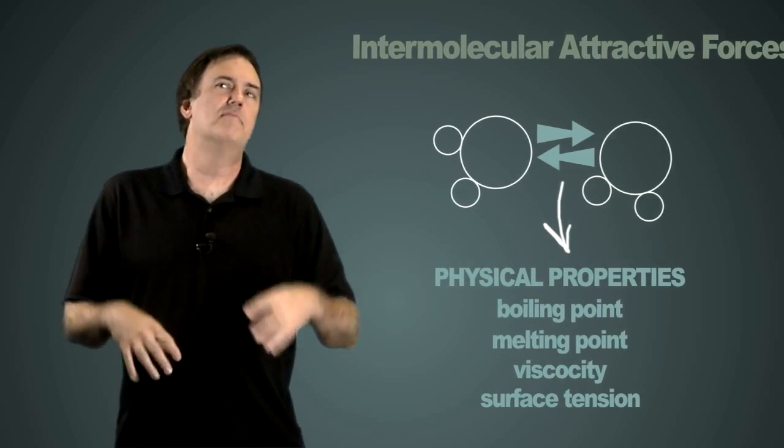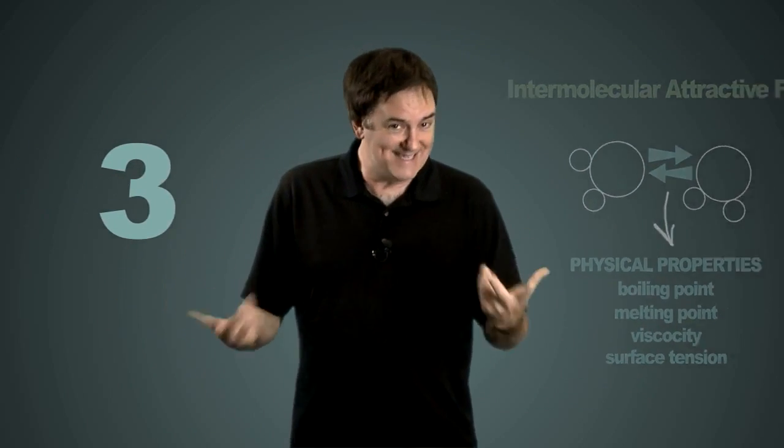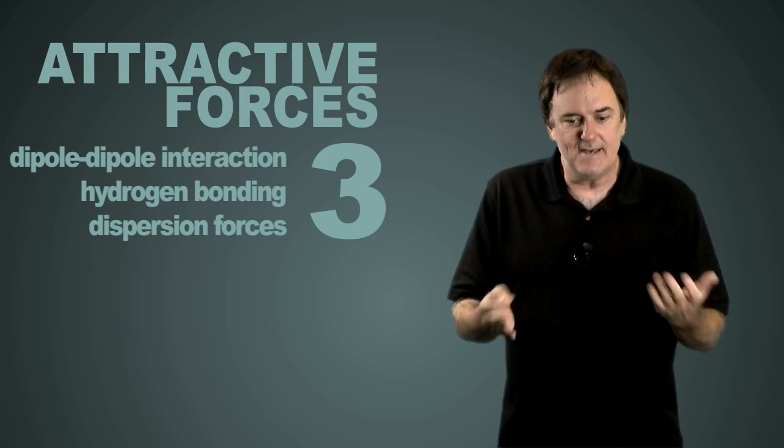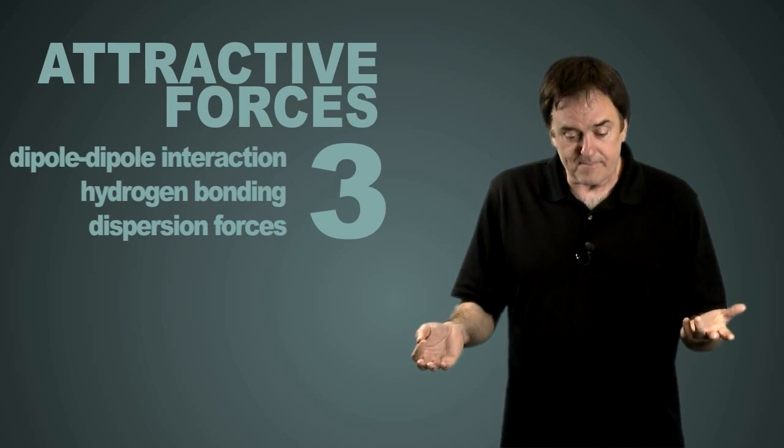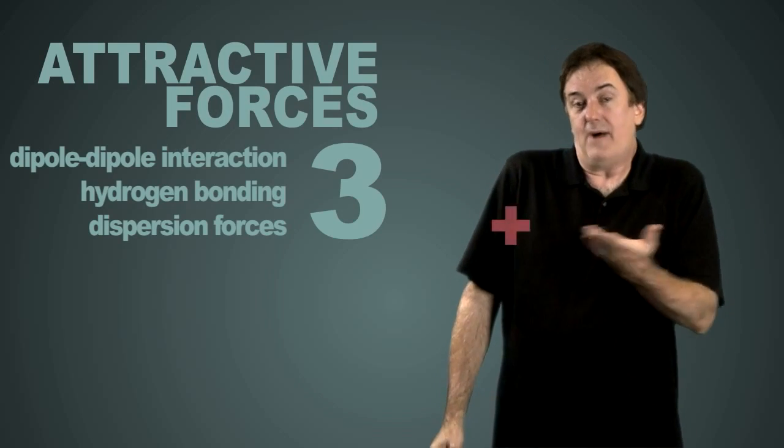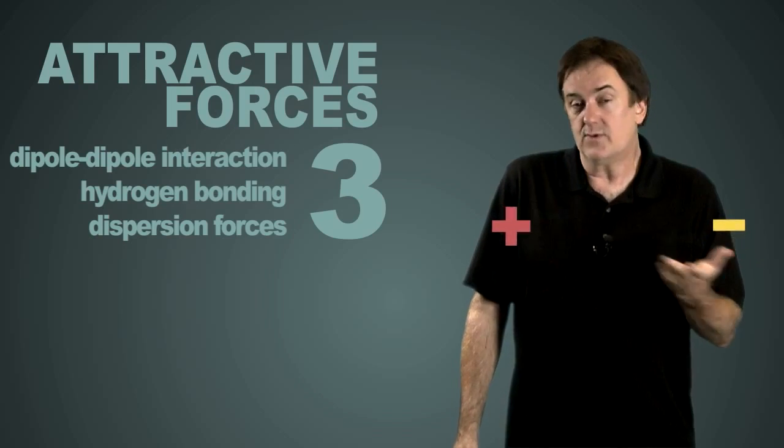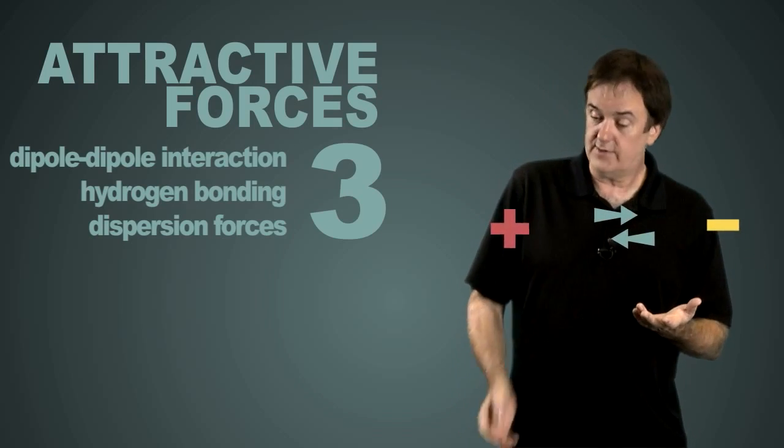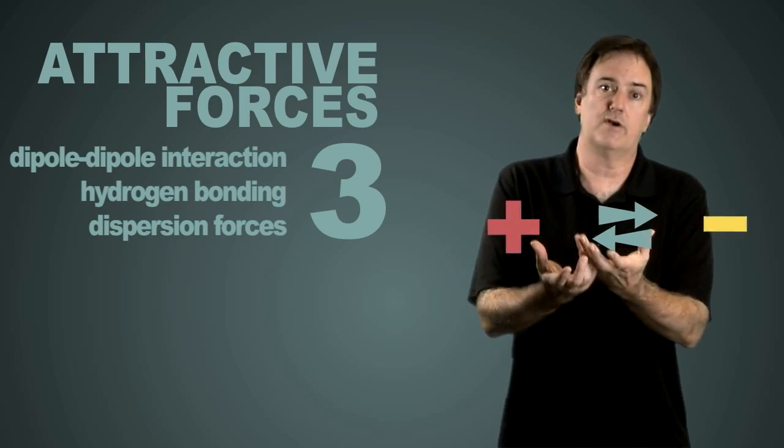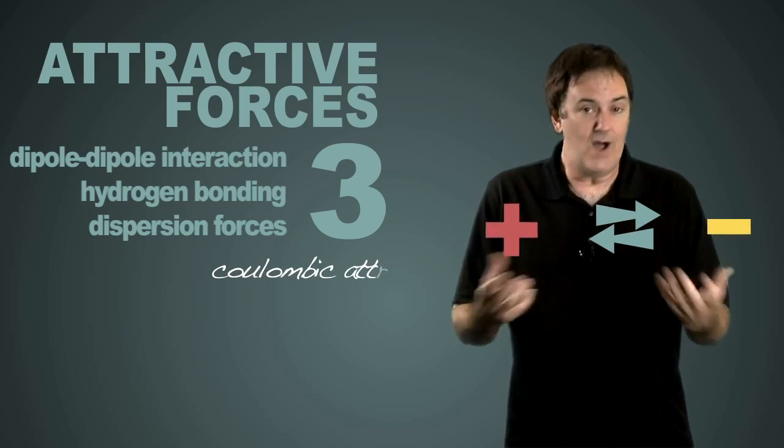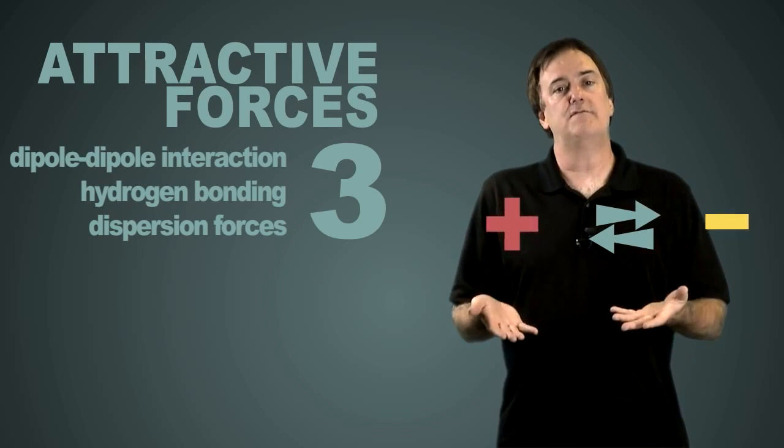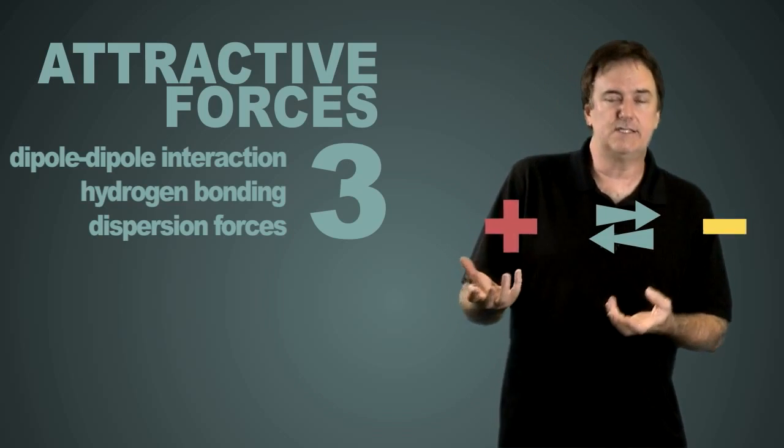We generally cover three basic intermolecular forces that we give three distinct names. The differences are really pretty subtle. It all comes down to the difference of a positive charge and a negative charge. That's really what the attractive force is about. So you have positive and you have negative. The more positive it is, the more negative it is, the stronger the force. This is simply a Coulombic attraction. Positive attracts negative. And we have all degrees of this. It's just a matter of how positive and how negative.